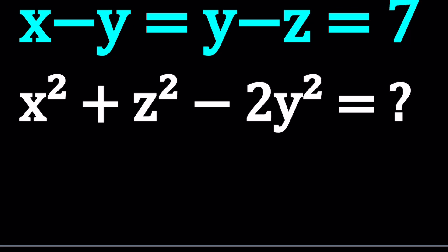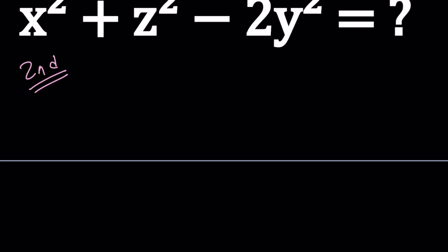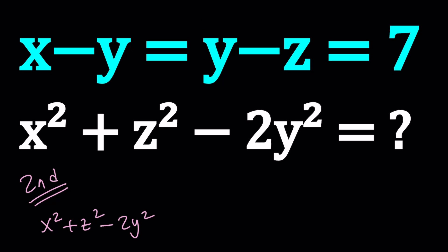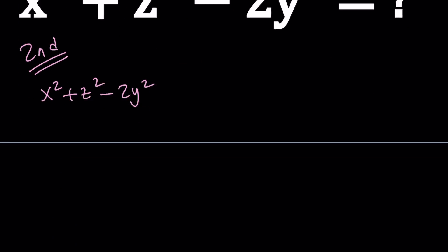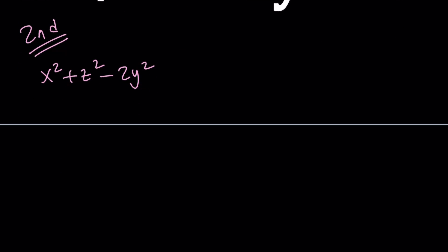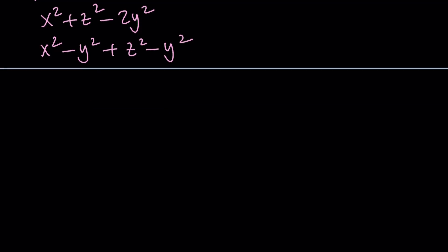I want to start with the second method because that's my favorite. For my second method, I'm going to start with x squared plus z squared minus 2y squared and then split the negative 2y squared. Looking at the expression, we are given x minus y and y minus z, those are differences. This kind of reminds me of difference of squares, which contains differences. So I'm going to write it as x squared minus y squared plus z squared minus y squared. I just split up the negative 2 into negative 1 plus negative 1.